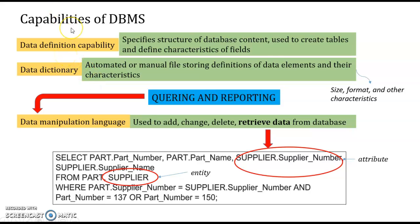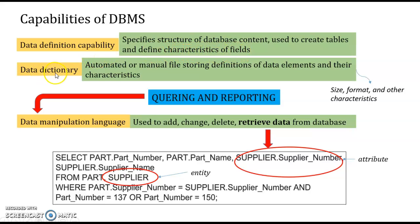I will explain about the capabilities of DBMS. The first one is Data Definition Language — it can specify the structure of database content, used to create tables and define characteristics of fields. The second is the Data Dictionary.